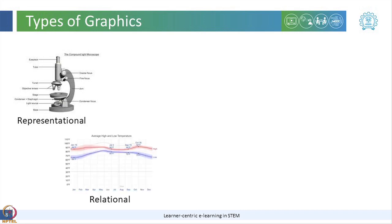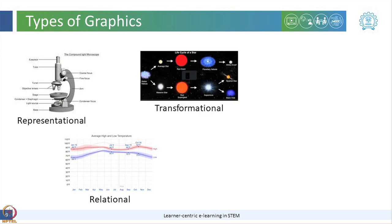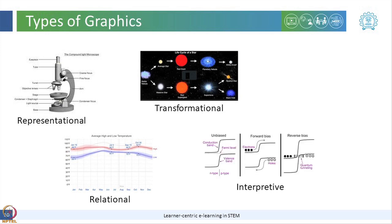Relational graphics can be used to convey quantitative relationships among different parameters and can be used to represent processes. Transformational graphics convey information about changes during space and time, and can be used to represent processes and procedures. Interpretive graphics can be used to make intangible or invisible concepts more tangible and concrete, and can be used to convey concepts, processes, or principles.